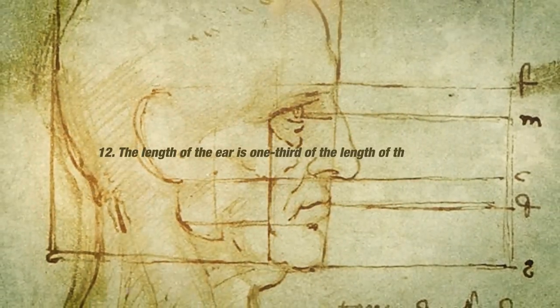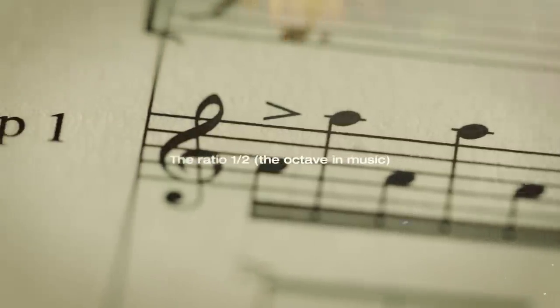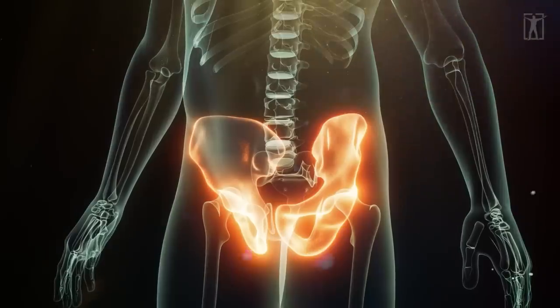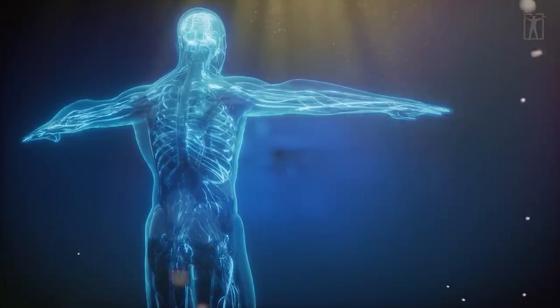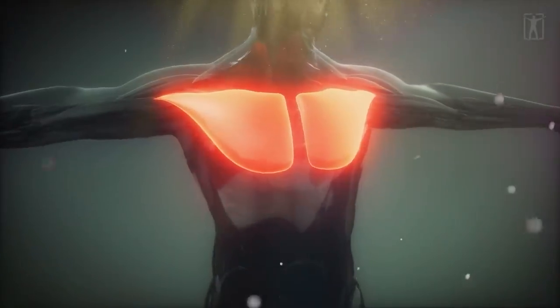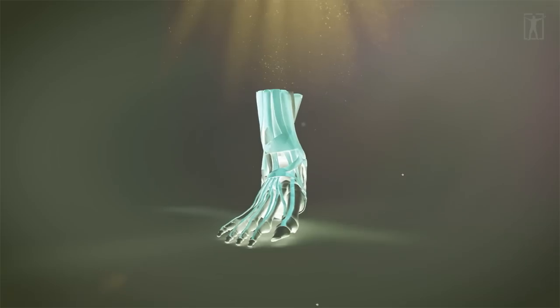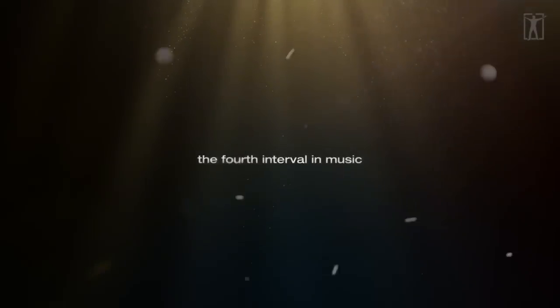The ratio 1 to 2, the octave in music, is created by the distance from the pubis to the feet compared to the overall height of the body. The ratio 3 to 4 is created by comparing the distance from the nipple to the feet to the overall height of the body, the fourth interval in music.